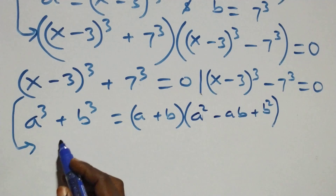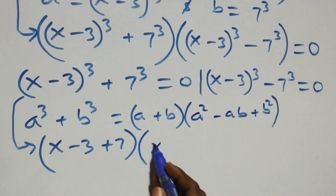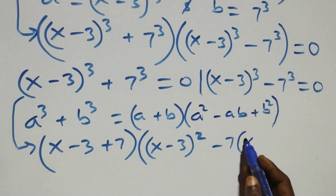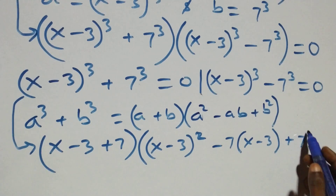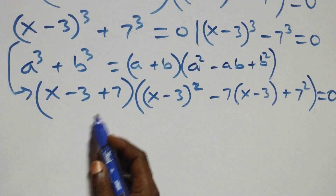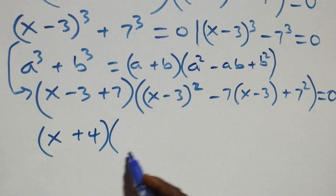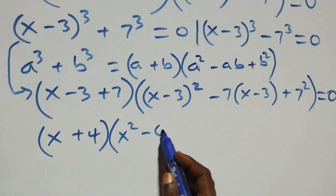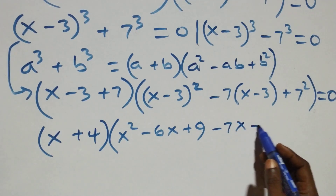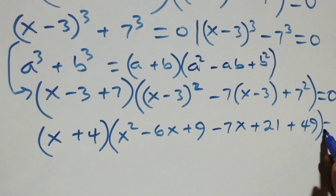Applying the formula, we get (x minus 3 plus 7) times [(x minus 3)^2 minus 7(x minus 3) plus 7^2] equals 0. Simplifying, x minus 3 plus 7 gives x plus 4. Expanding the bracket: x^2 minus 6x plus 9, then minus 7x plus 21, then plus 49.